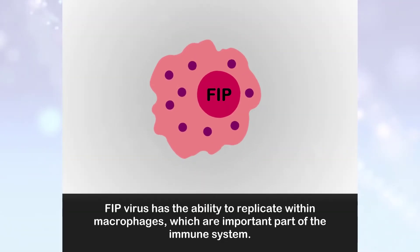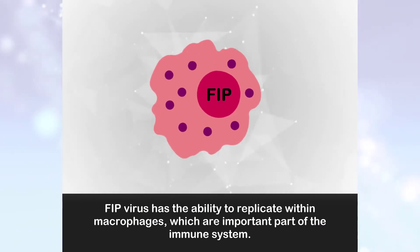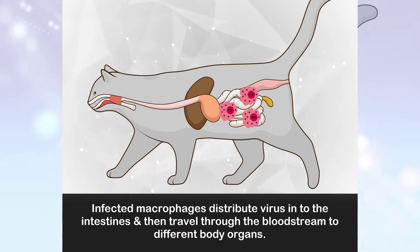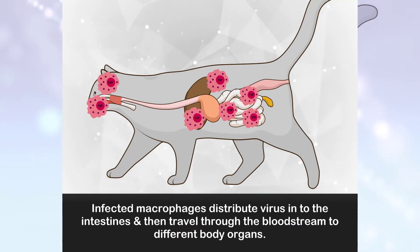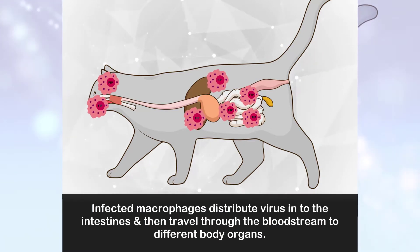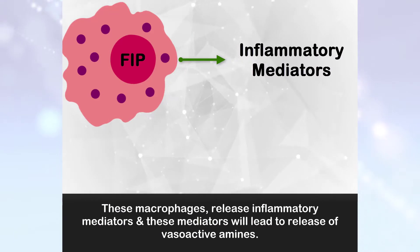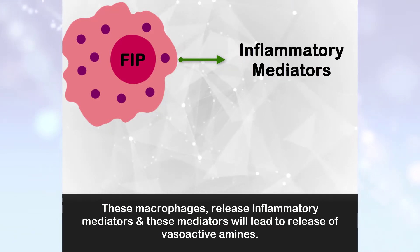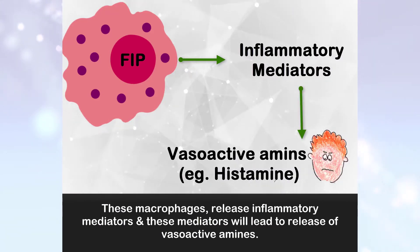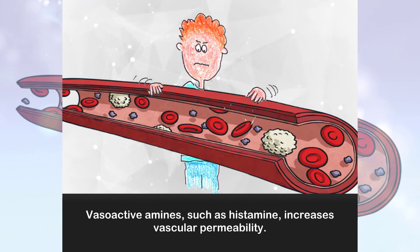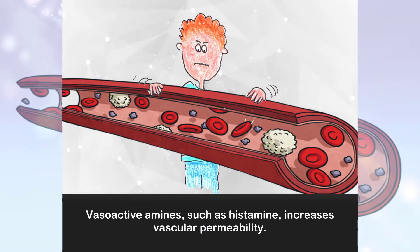FIP virus has the ability to replicate within macrophages, which are an important part of the immune system. Infected macrophages distribute virus into the intestines and then travel through the bloodstream to different body organs. These macrophages release inflammatory mediators, and these mediators will lead to release of vasoactive amines, such as histamine.